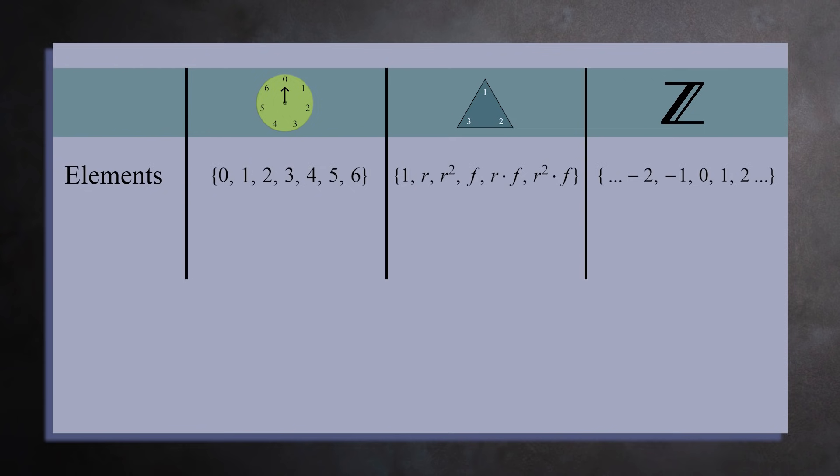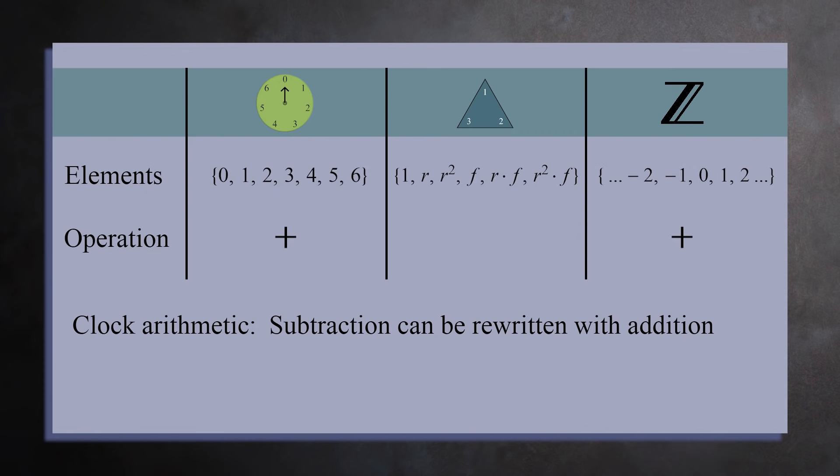Next, for each of these sets, there's a way to combine any two elements to get another element in the set. We call this an operation, and we use a symbol to show that we are combining two elements. For the integers, the operation is addition, and the symbol is a plus sign. For the integers mod 7, the operation is also addition. In modular arithmetic, we also use the plus sign, even though addition means something different on a clock. As with the integers, subtraction is redundant. Any subtraction problem can be rewritten as an addition problem. For example, 2 minus 4 is the same as 2 plus 3. And for the symmetries of a triangle, it's common to use a multiplication symbol. You could use a different symbol if you'd like, but people tend to reuse the addition and multiplication symbols a lot with groups.